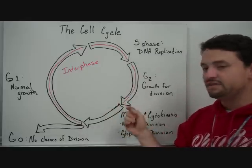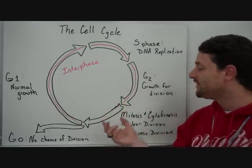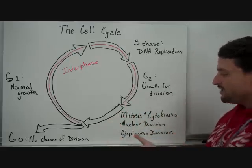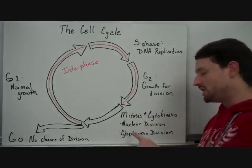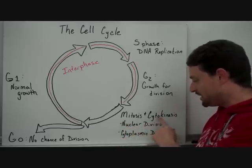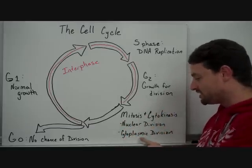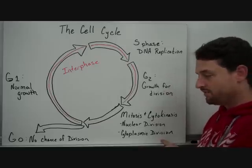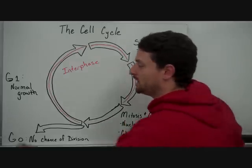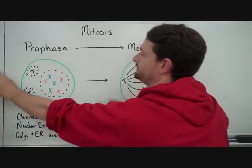After the G2 phase, there will be a checkpoint to see if everything is good and ready to divide. If it is, it will go into mitosis — the definition of mitosis is nuclear division. After mitosis is complete, we'll have cytokinesis, whose definition is cytoplasmic division. At that point we'll have two cells. Let's look at mitosis and cytokinesis now.